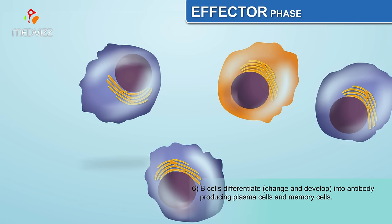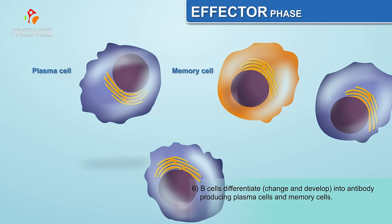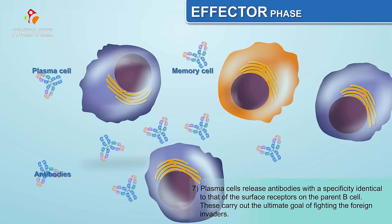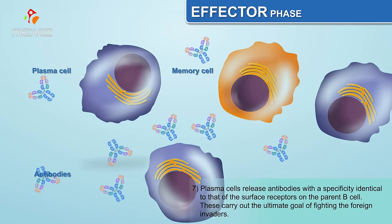The B cells differentiate, change, and develop into antibody-producing plasma cells and memory cells. The plasma cells release antibodies with a specificity identical to that of the surface receptors on the parent B cell. These carry out the ultimate goal of fighting the foreign invaders.